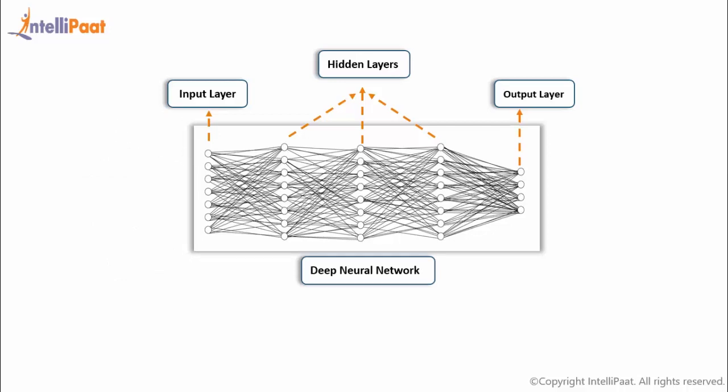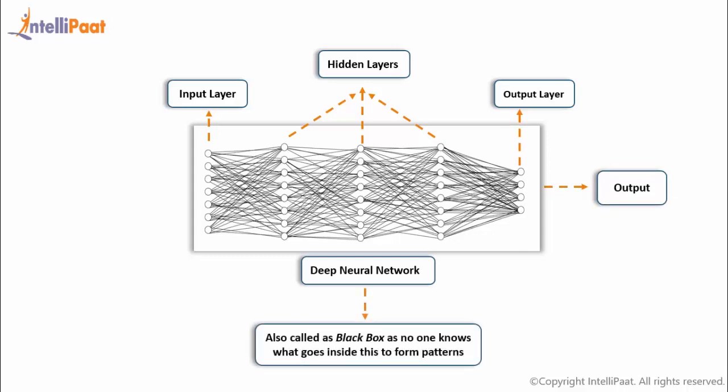The deep neural network itself would form its patterns and come up with the output. This deep neural network is also called a black box because it is very difficult to know what exactly is going inside to form patterns.